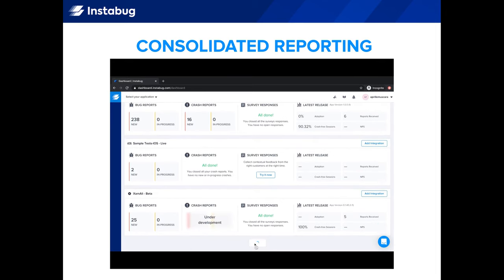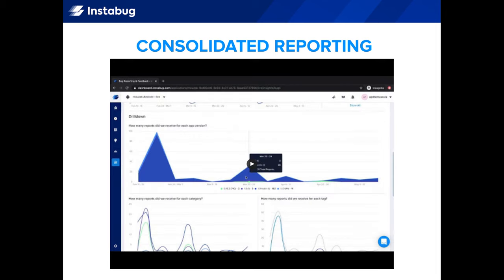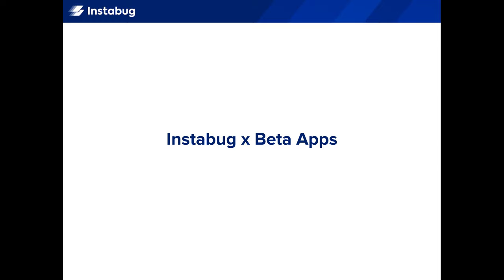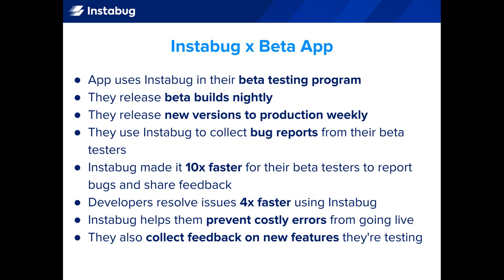You can experience these products for yourself by signing up for a free 14-day trial on our website, and we're happy to extend that if you need more time. Now I'd love to share a couple of real-world examples of how our users are making the most out of Instabug's real-time contextual insights. The first example is an app that uses Instabug for beta testing. They have a sophisticated beta program with hundreds of beta testers who help crowd test their app, and they use Instabug to collect bug reports and prevent costly errors from making it into production. With Instabug, they've cut multiple steps from their old bug reporting and beta testing workflows, so they're working faster and smarter.